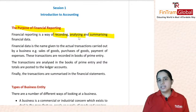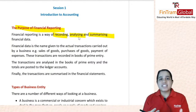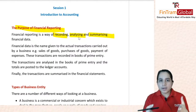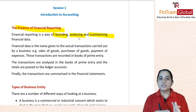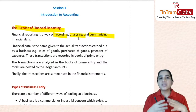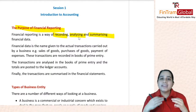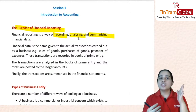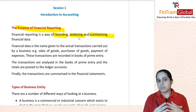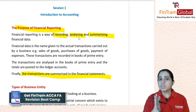The key words are: recording, analyzing, and summarizing. Financial data refers to any transaction — for example, buying goods or selling goods. These transactions are recorded in your books of prime entry, such as the sales day book or journals. Then you analyze those transactions, and finally you summarize them — and they take the shape of your financial statements. The ultimate aim is to produce your financial statements.